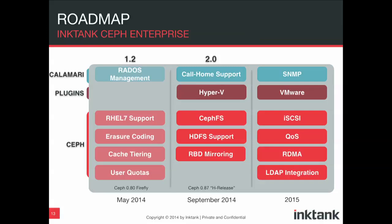RBD mirroring — which allows you to take a virtual block device and mirror it to another virtual block device — is also on the roadmap. Further in the future: iSCSI, quality of service, RDMA which a lot of people are asking for, and LDAP integration for the cluster. So this is the big building-block, Duplo version of our roadmap for people who need the big blocks.